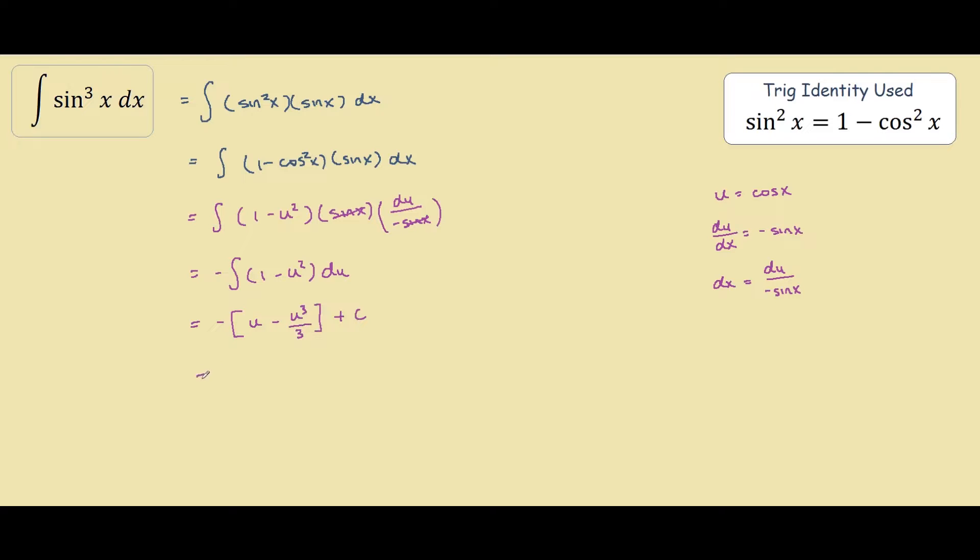So distributing that negative into our bracket, we have negative u plus u cubed over 3. Now taking back our integral into the x world, we replace u with cos x. So we have negative cos x plus cos cubed x divided by 3 plus c.